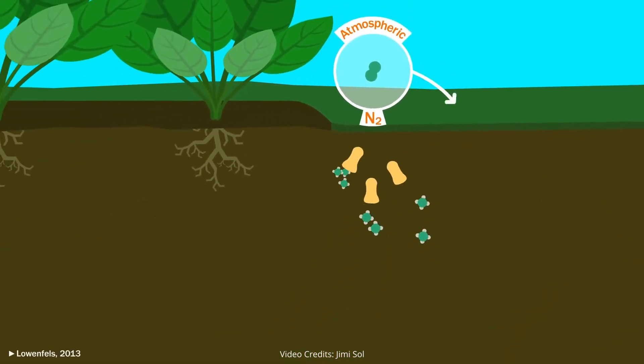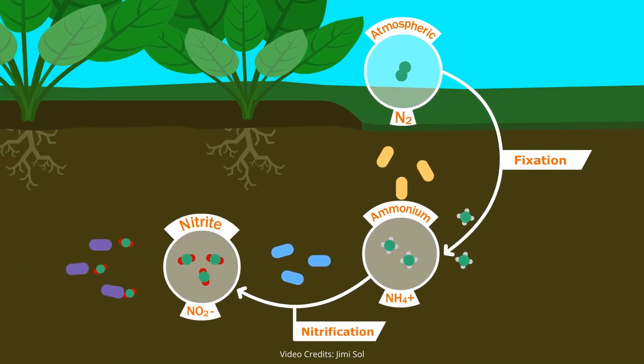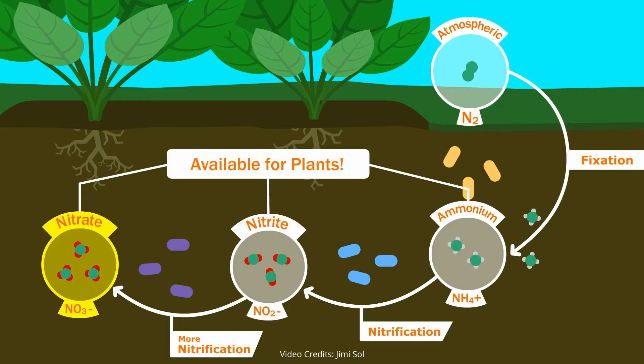Various species of bacteria eat atmospheric nitrogen and poop out ammonium. This gets eaten by other kinds of bacteria, which poop out nitrite, which gets eaten by yet another kind of bacteria, which poops out nitrate. All of these forms of nitrogen are available for plants, especially nitrate, which is the easiest for plants to use.